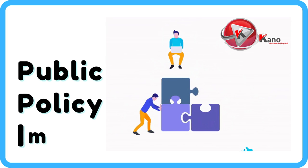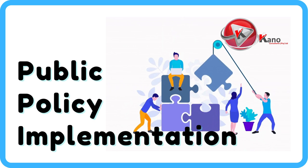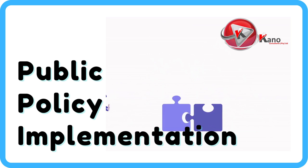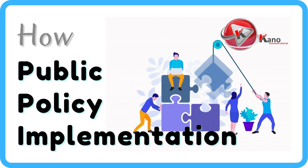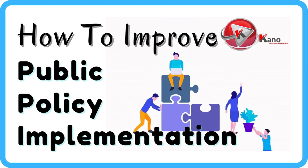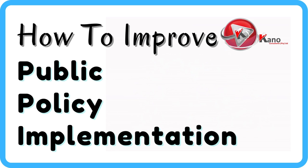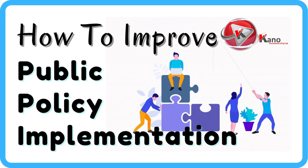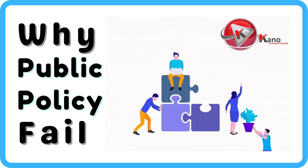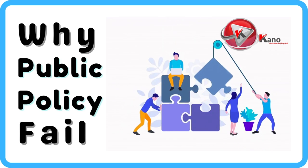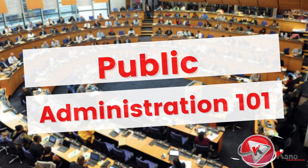Public policy implementation is a set of activities that the government undertakes to achieve the goals and objectives set out in the government's policy statements. In this video, we aim to provide guidelines on how governments and other stakeholders can improve their public policy implementation. We will also discuss why some public policies fail. Welcome back to Public Administration 101.